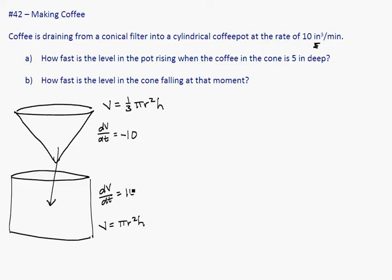The first problem is talking about the pot, the cylindrical coffee pot. They are asking how fast is the level rising, and they tell us at five inches deep—but we're going to find out we don't even use that right now. So they're asking us about how the height is changing for the cylinder.